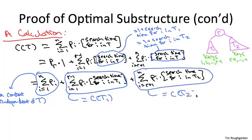Similarly, this last sum, sum from i equals r plus 1 to n of the frequency of i times the search time in T2, that's just the weighted search time in the search tree T2.